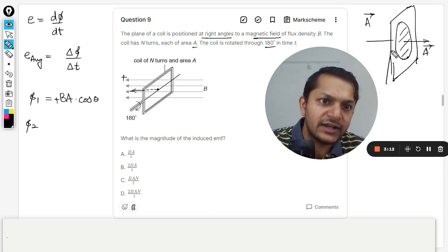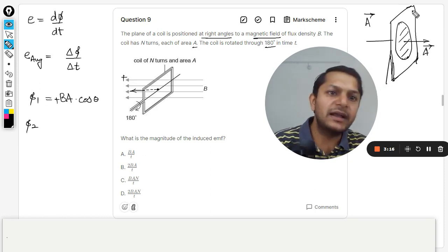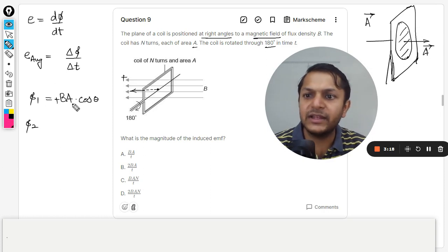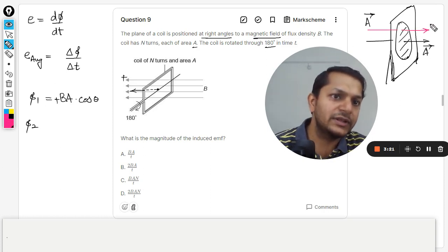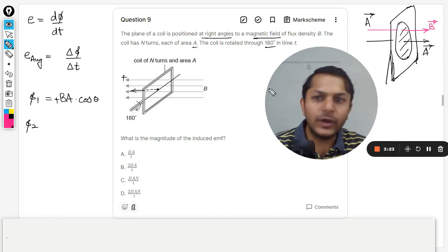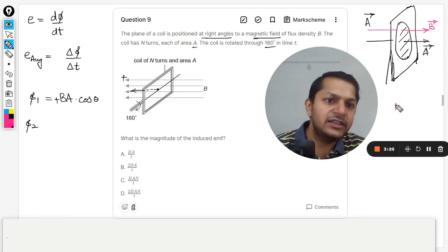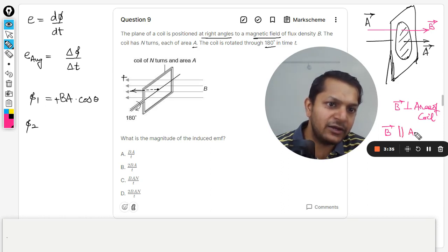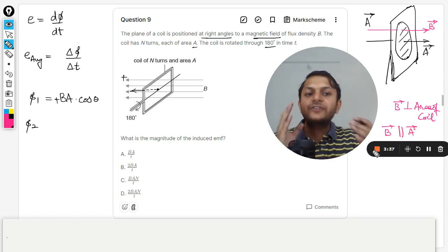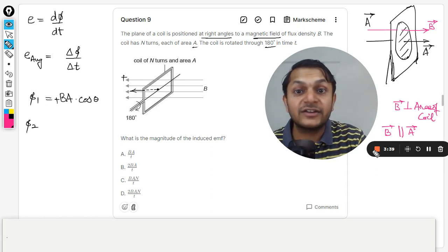Try to understand—this is the plane of the area, and the magnetic field is given by, let us say, the magnetic field is also in this direction. So in this case, clearly the magnetic field is perpendicular to the area of the coil, but the magnetic field vector is parallel to the area vector.